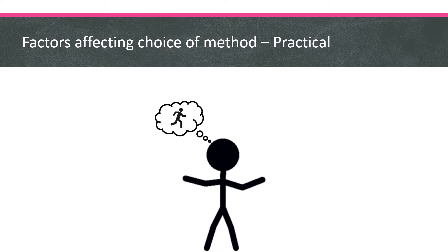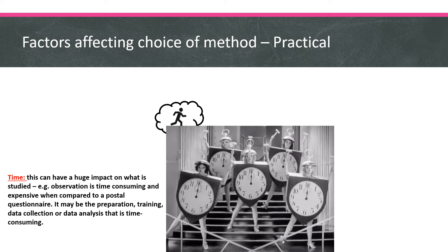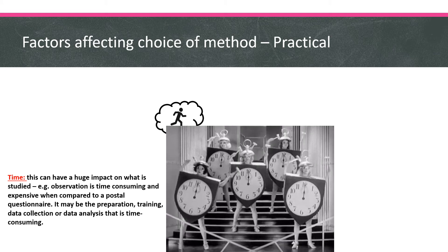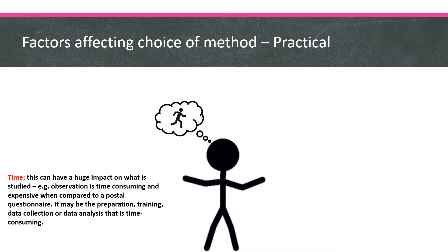Let's start looking at practical factors. The first of these is time. Time is a massive influence when conducting research because the less time you have, the quicker your method needs to be. If you have long periods of time, you may choose more in-depth, more investigative methods. For example, a questionnaire is very quick compared to participant observation, which is quite long — the time frame you have will dictate the method you choose.